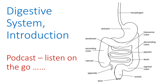The accessory organs are not part of the GI tract canal itself, but they do produce and secrete enzymes and other fluids that are essential for digestive processes. These include the salivary glands putting saliva into the mouth, the liver delivering bile into the duodenum, and the pancreas delivering pancreatic digestive enzymes into the lumen of the duodenum.